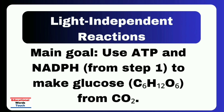Carbon dioxide from the air enters the cycle and through a series of enzyme-controlled steps is combined and converted into a 3-carbon sugar molecule called G3P. This molecule is later used to form glucose and other carbohydrates that the plant needs for energy and growth. ATP provides the energy while NADPH supplies the high-energy electrons needed to build the sugar molecules. In simple terms, the light independent reaction uses the energy stored earlier to turn CO2 into glucose, completing the photosynthesis process.